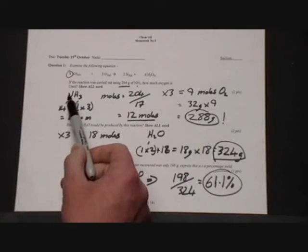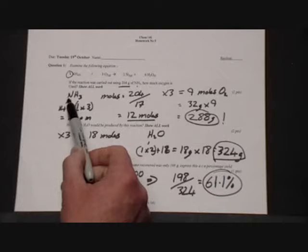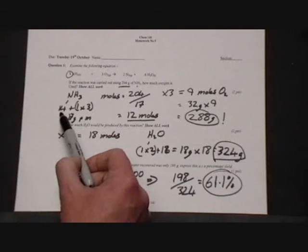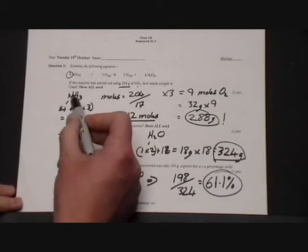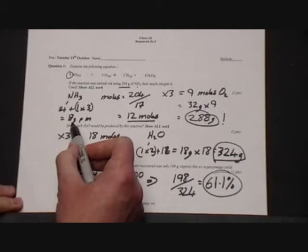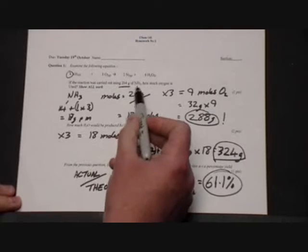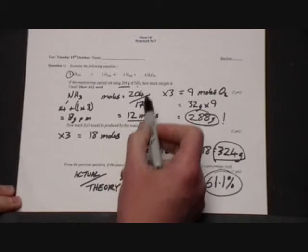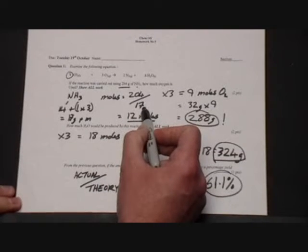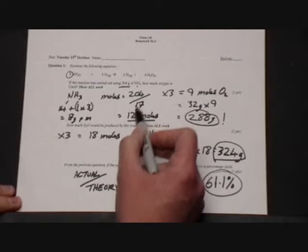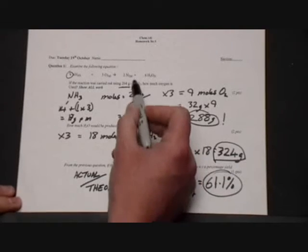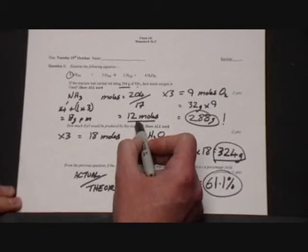So for one mole of NH3, 14 grams for nitrogen, one gram for hydrogen. So one mole of NH3 is actually 17 grams. If we have 204 grams, we divide by the mass of one mole, 17, and the number of moles of ammonia, NH3, is therefore 12 moles.